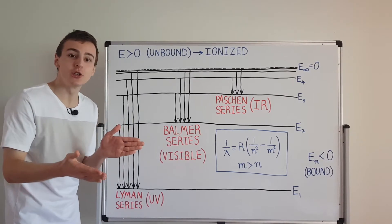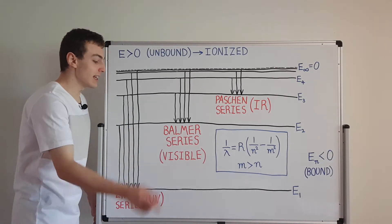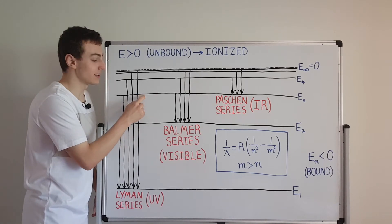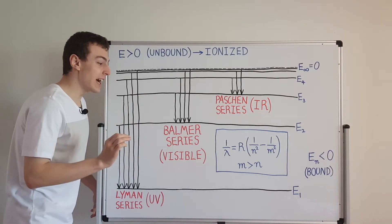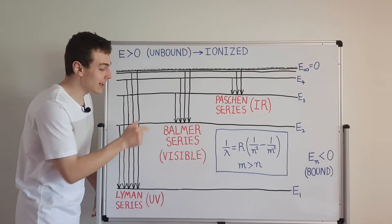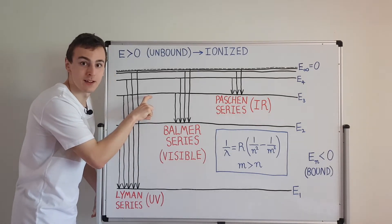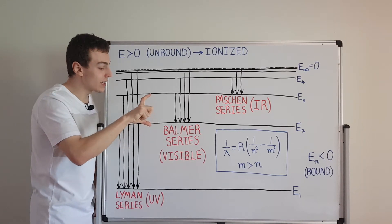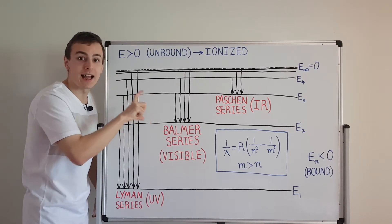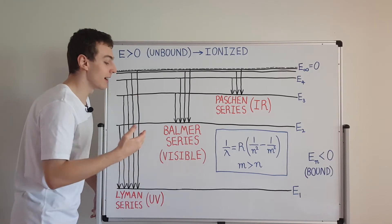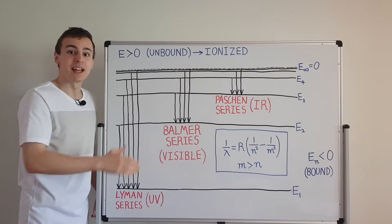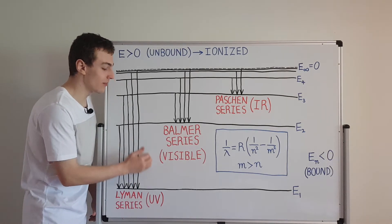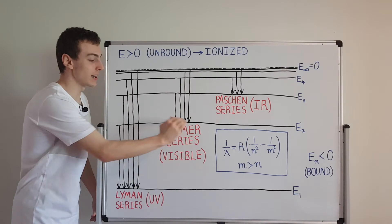Absorption is kind of like the mirror image of emission. Absorption is when the electron starts in a lower state, gets hit by a photon, absorbs the energy, and jumps up to a higher state. The photon has to have exactly the right energy to make this transition happen — it can't have half the energy, it has to be a complete chunk equal to the full energy difference. This is all a consequence of quantization: energy is quantized, which is why only the black-line energies are allowed.